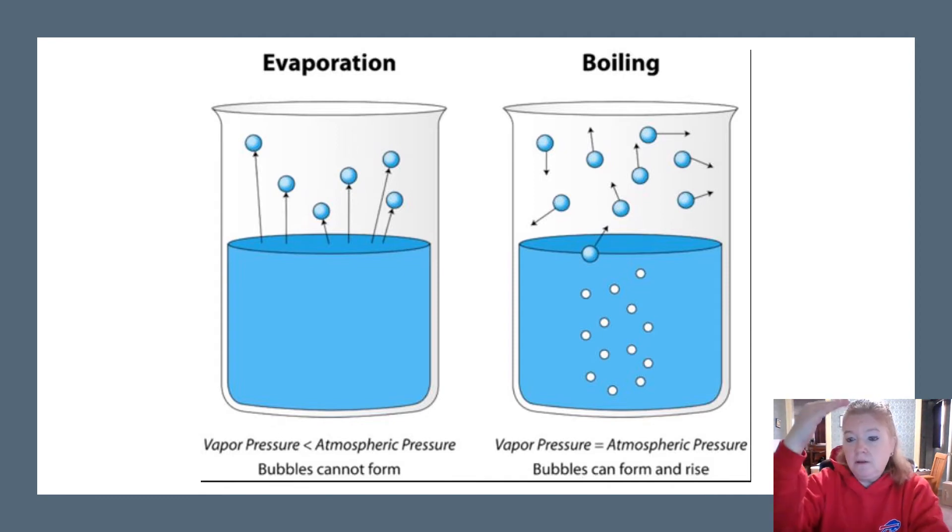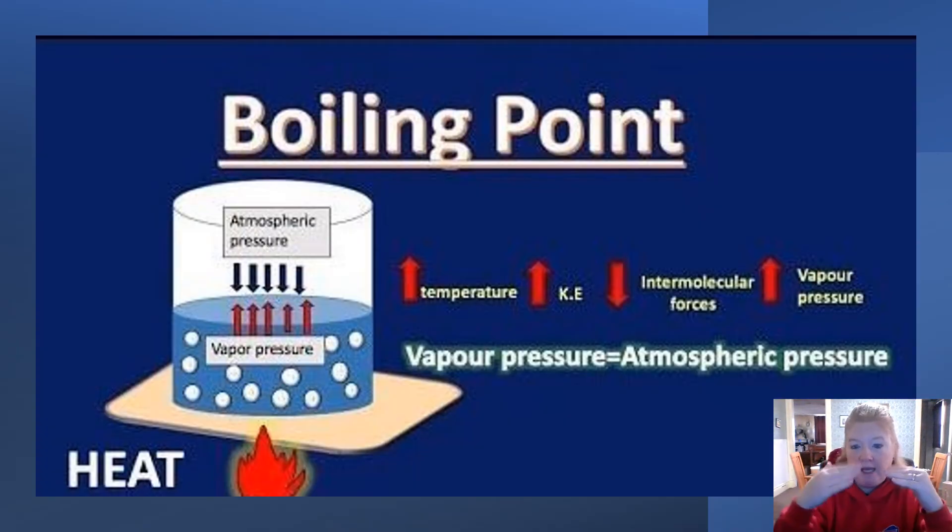In order to boil, I can either lower the atmospheric pressure or increase the vapor pressure in the liquid by providing heat. Boiling point means the vapor pressure equals the atmospheric pressure. To do that, I increase the temperature, which increases the kinetic energy. That causes the intermolecular forces to decrease because particles are moving faster and not held together as tightly. As those intermolecular forces drop, the vapor pressure goes up until eventually it equals the atmospheric pressure and it will boil.